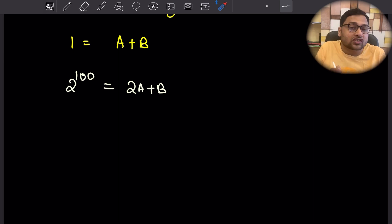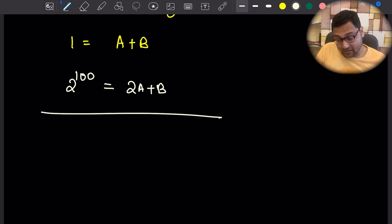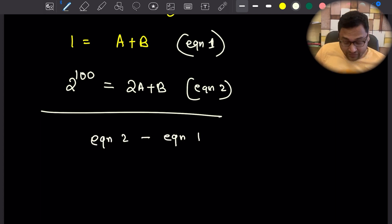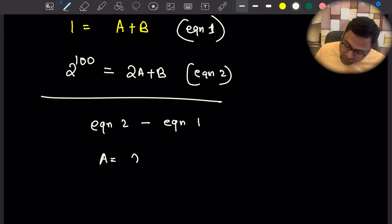If I subtract equation 1 from equation 2, I get a equals 2 to the power 100 minus 1.